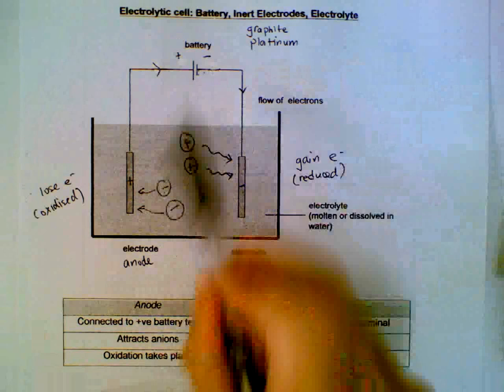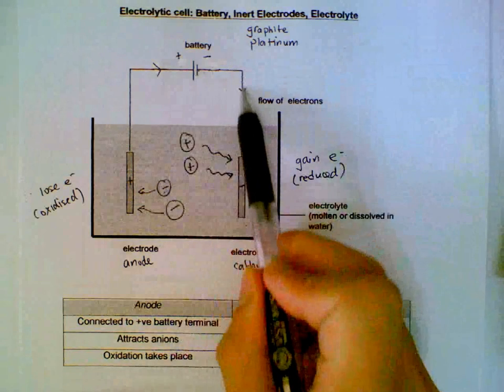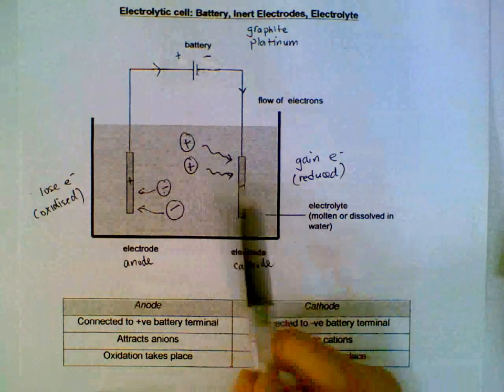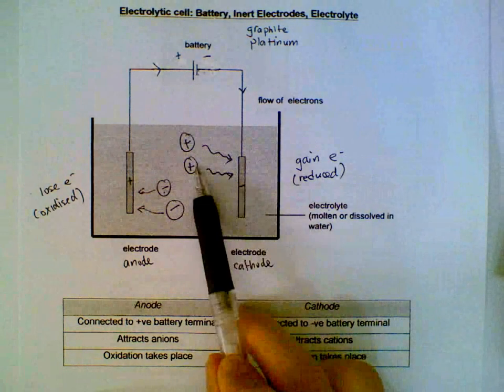So we have the flow of electrons coming from here, reaching the electrodes and discharging the positive ions.